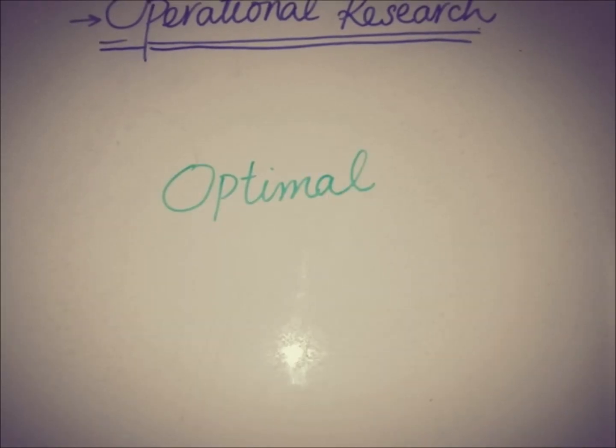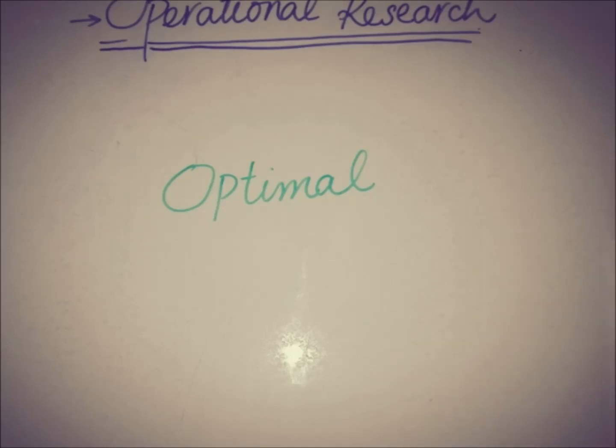Hello everyone, this is Jay from the Academy. Today this video is about some of the techniques that we use in order to make better decisions. These are techniques used in operational research to reach optimal solutions to ambiguous or complex decision-making problems. Here I've used the word 'optimal,' which means the best solution or the most favorable in a certain situation, so we are going to find an optimal solution to any ambiguous or complex problem.